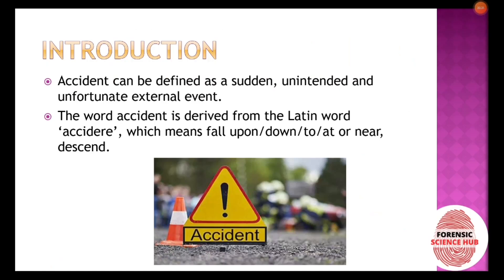An accident can be defined as a sudden, unintended, and unfortunate external event. Sudden, because an accident always occurs suddenly. Unintended, meaning there was no intention — it just happened. And unfortunate, because it leads to harm to a number of people involved in the accident.